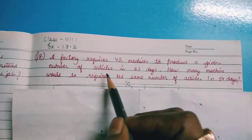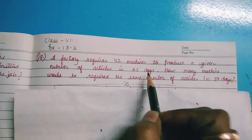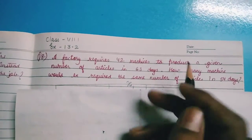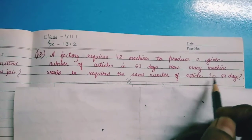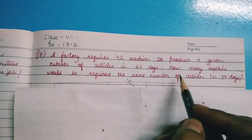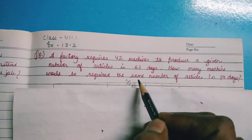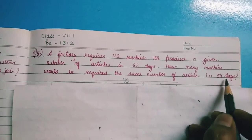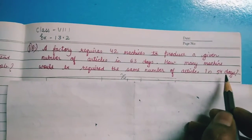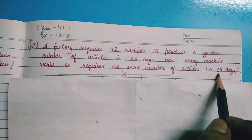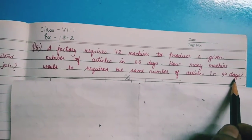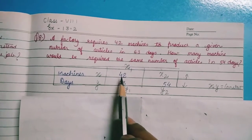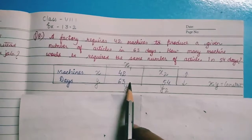Question number 8: A factory requires 42 machines to produce a given number of articles in 63 days. So 42 machines can finish the work in 63 days. How many machines would be required to produce the same number of articles in 54 days?